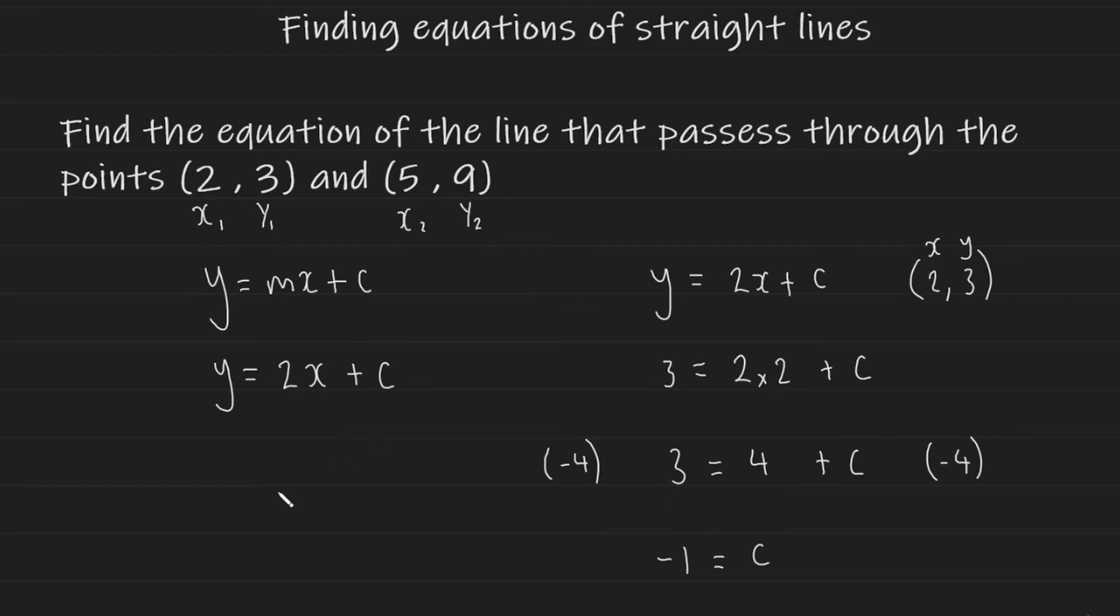So now I can write the full equation of the line that goes through these two points. y is equal to 2x, so we found the gradient to be 2, and c is -1. So we're going to add a negative value which just gives us a minus value. What you could effectively do is just write the value of c next to it like this, and there you have it. This equation here is the equation of the line that goes through these two coordinates.